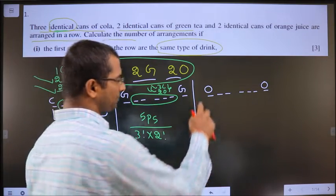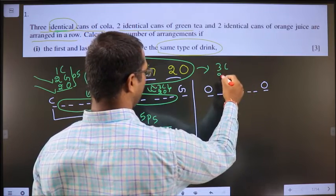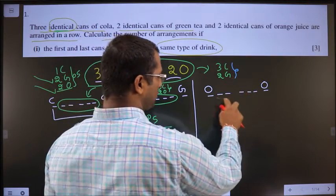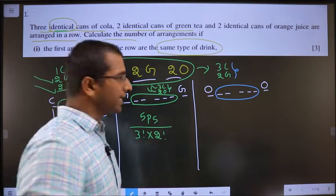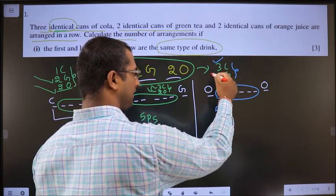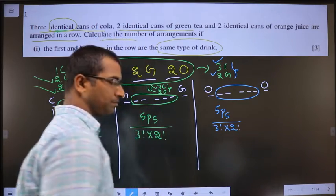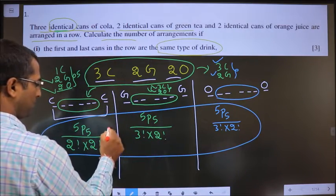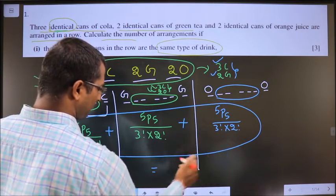Case 3 — Orange at ends: from the total, 2O are gone. Left out are 3C and 2G. These 5 need to be arranged in 5 places: 5P5 ways. These 3 cola are identical and these 2 green are identical, so divide by 3! and 2!. Now add all 3 cases. Put it in the calculator — you get the answer to be 50.